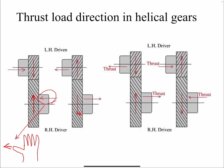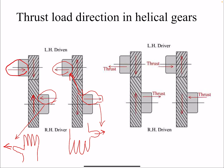Using the right-hand rule: four fingers point in the direction of rotation, and the thumb indicates the direction of axial load on the driver. The axial load on the driven gear is the opposite direction, because it's action and reaction. Tangential components are the same magnitude but opposite direction. Radial loads have the same magnitude acting in opposite directions. The same applies for axial load: same magnitude, opposite direction.